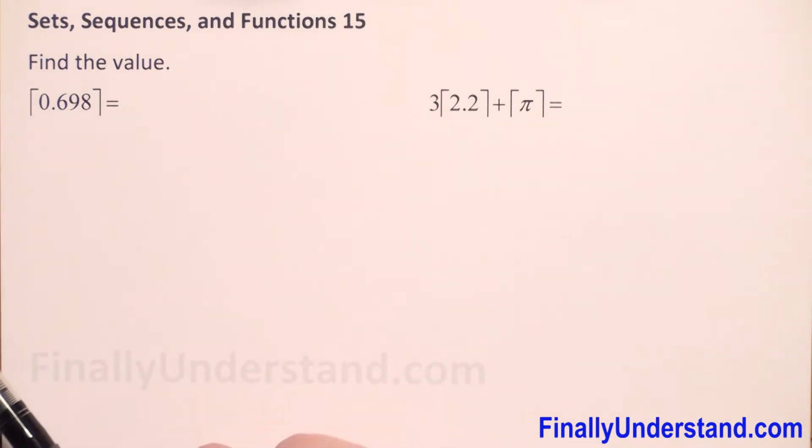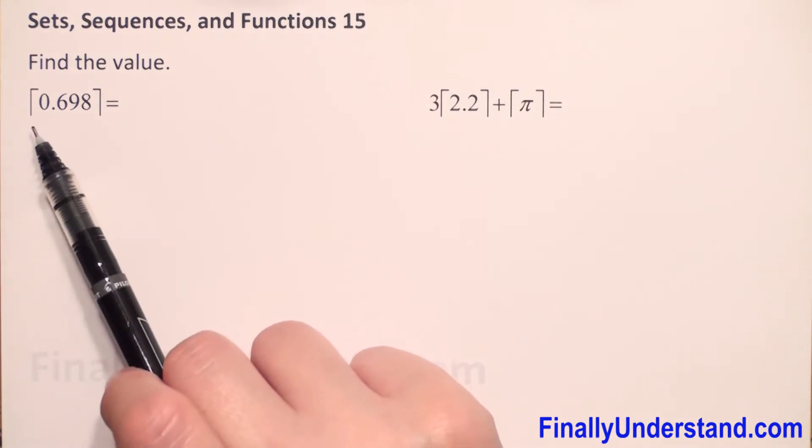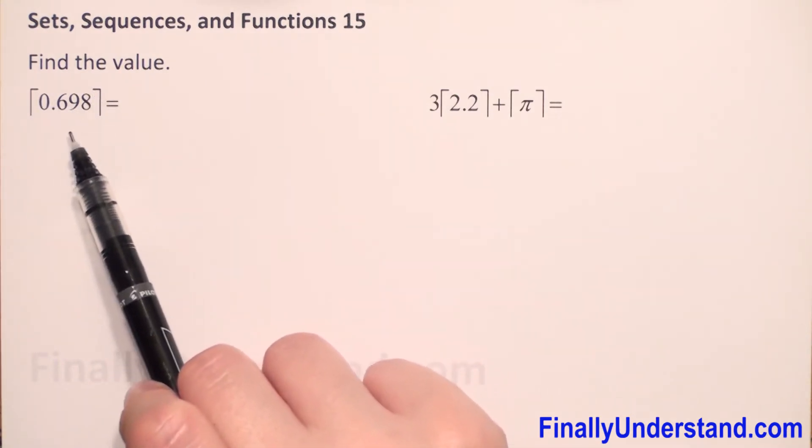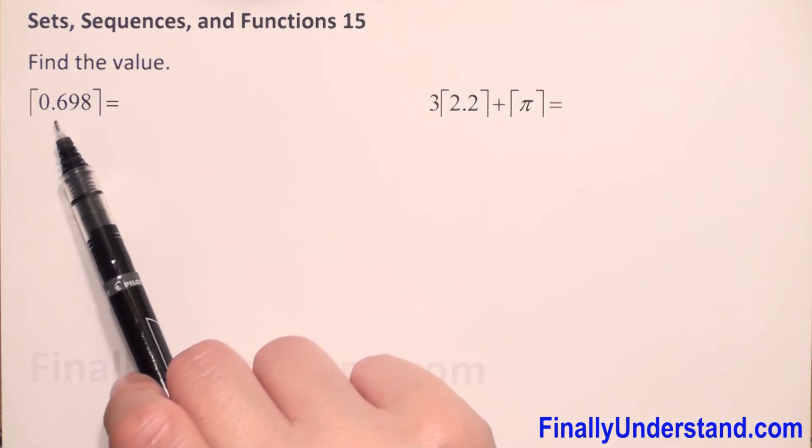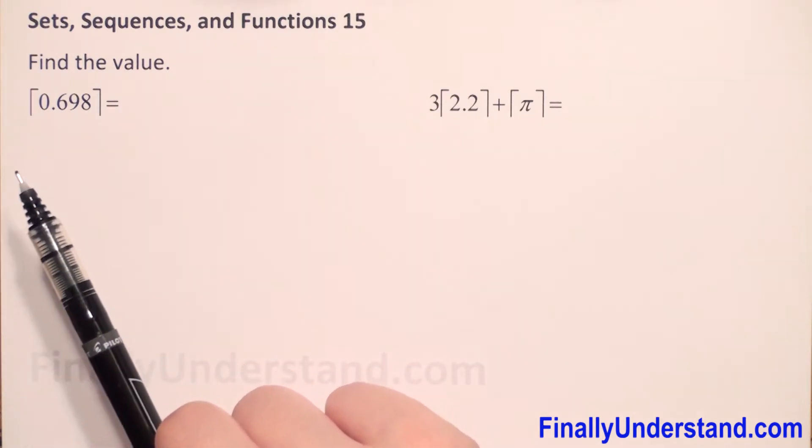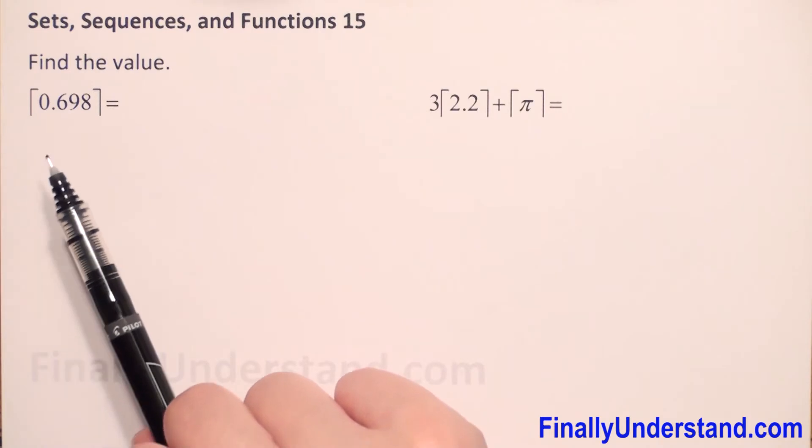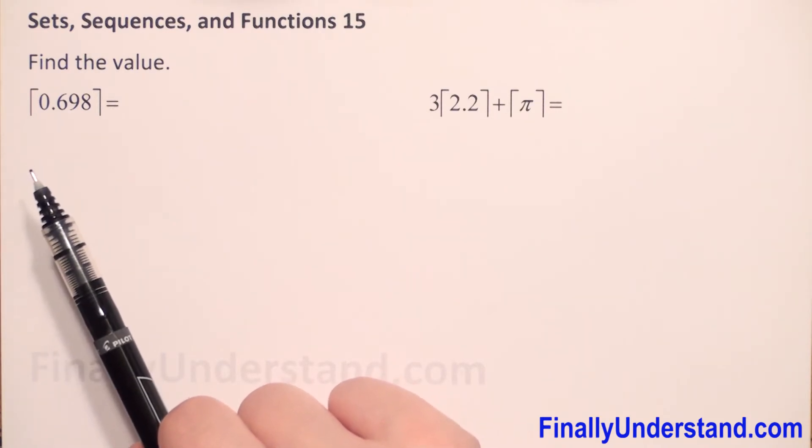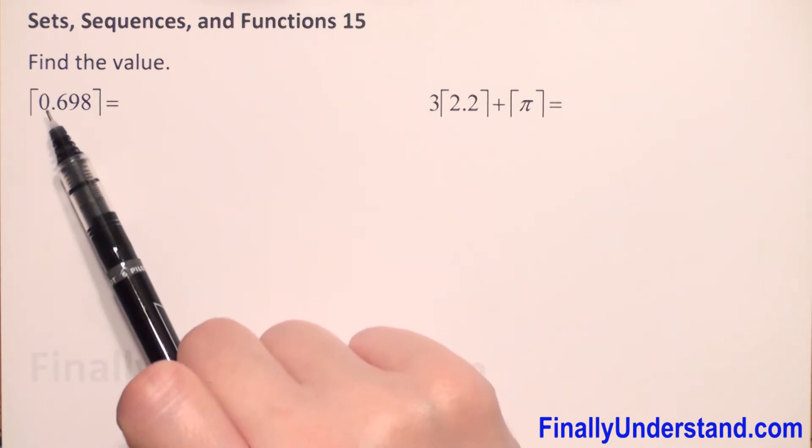So, let me remind, when we have brackets like this, we have to find the ceiling of this number. The ceiling of a number is the smallest integer that is at least as big as this number.